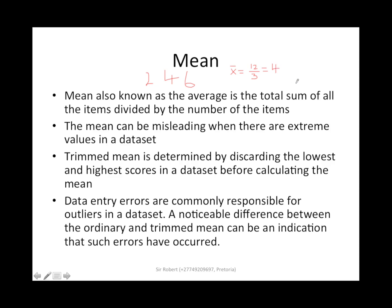Sometimes in data entry there are some errors which can cause us to have some figures or numbers that are not in sync or corresponding to the data set you have. For example, we might have 2, 4, 8, 10 — and maybe another value like 50. This is just an example.